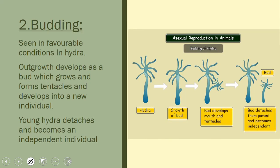Next is budding, which is commonly seen in Hydra during favorable conditions. A bud grows toward the base of the parent organism, develops mouth parts and tentacles, and slowly detaches to become an independent organism. So budding occurs in favorable conditions.